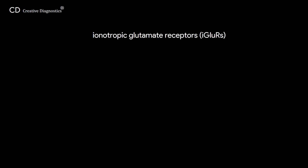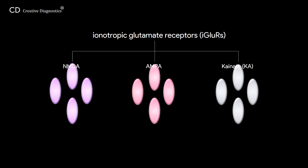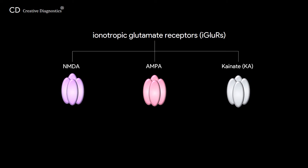Ionotropic glutamate receptors can be further categorized into NMDA receptors, AMPA receptors, and Kainate receptors. They are heterotetramers formed by two dimers with different combinations of subunits. AMPA receptors are formed by two dimers with different combinations of the four subunits GLU-A1, A2, A3, and A4, usually GLU-A1 combining GLU-A2, and GLU-A2 combining GLU-A3, in the mammalian CNS.